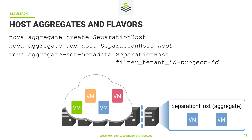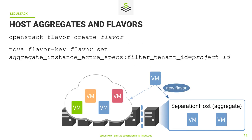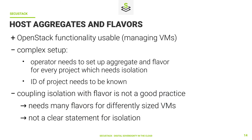Instances of the red, yellow and green projects will only be spawned on the other compute nodes. We can see a new virtual machine that is scheduled, yet it is not sure where it will be spawned. It is not enough to use host aggregates alone — we also need a new flavor. For this flavor we set extra metadata for the scheduler so that when this flavor is used, the VM will only be scheduled on a host in an aggregate with the filtered tenant ID equals project ID property matching the same project ID. An advantage of using aggregates and flavors is that we use native OpenStack functionality to manage VMs. On the downside, it is a complex setup: the operator needs to set up an aggregate and flavor for every project requiring isolation, and the project ID needs to be known. Further, coupling isolation with flavor is not good practice — it needs many flavors for differently sized VMs and is not a clear statement for isolation.